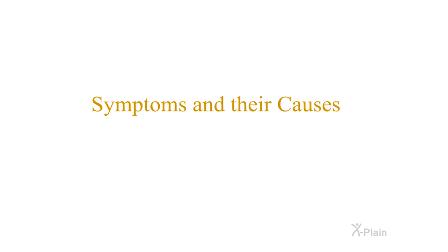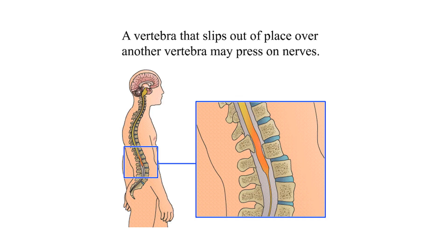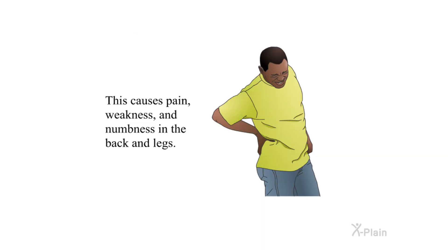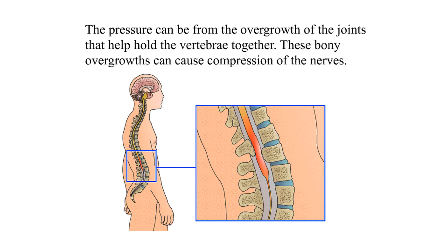Symptoms and their causes: A vertebra that slips out of place over another vertebra may press on nerves. This causes pain, weakness, and numbness in the back and legs.